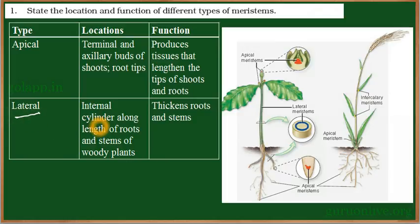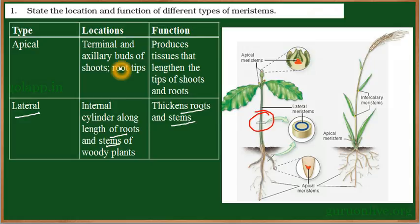The second type is called lateral meristem. These are present in the stem region. If we take a transverse section of a stem, we can find ring-like cells arranged in a circular form — these are lateral meristems. They are only found in dicot plants, and they help in increasing the diameter of stems and roots, contributing to secondary growth.